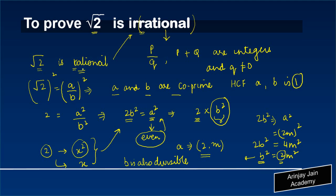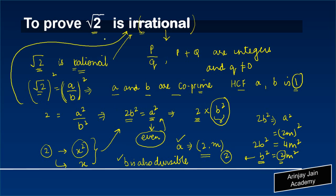Now if root 2 was a rational number, which we had expressed as A upon B, then A and B should have been co-prime, meaning their HCF should have been 1. But what we have noticed is that both A and B are divisible by 2, meaning they have a common factor of 2, which cannot be true if root 2 was rational. Therefore, we say that square root of 2 is an irrational number.